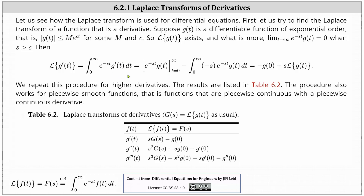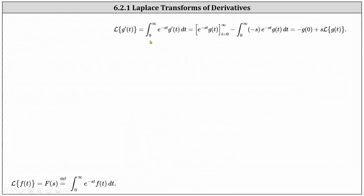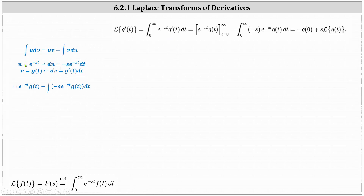Let's look at this improper integral in more detail. After applying the definition of the Laplace transform for g prime of t, we perform integration by parts, shown here in blue on the left, where u is equal to e to the power of negative st, indicating dv equals g prime of t dt. We differentiate to find du: du equals negative s times e to the power of negative st dt, and we integrate to find v: v equals g of t. Below, I've applied the integration by parts formula, but we have an improper integral, which results in the second step above.